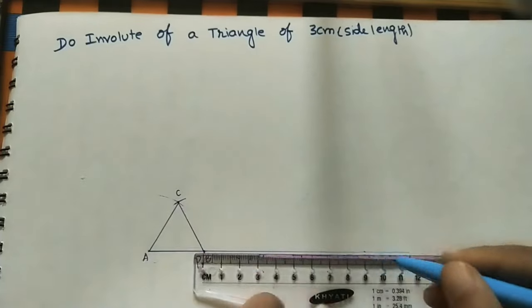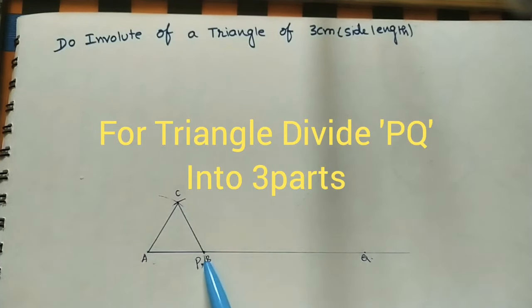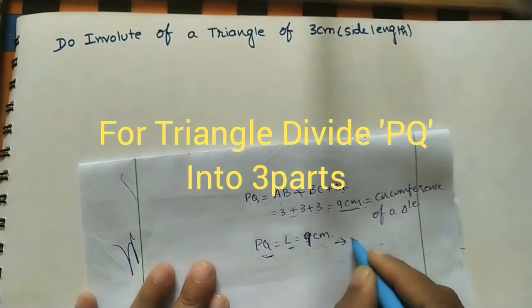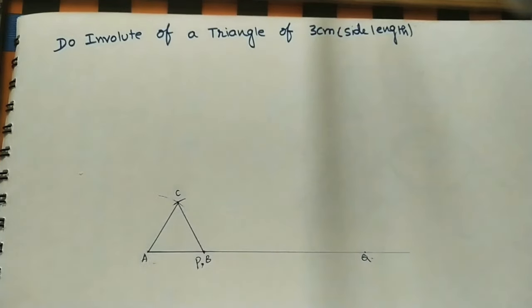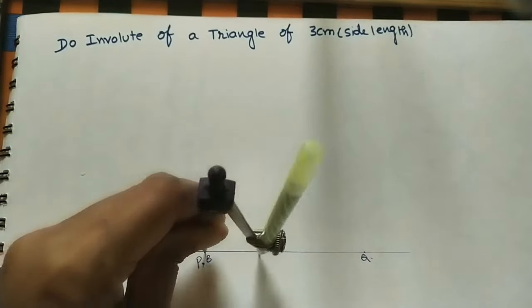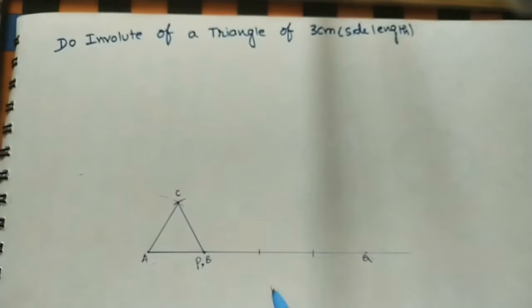Mark P here. Take PQ length as 9cm and mark Q point. After marking 9cm, divide this length into 3 parts, each part being 3cm. From P, this is the first part, this is the second one, and the third one is also 3cm. Mark these as points 1, 2, and 3.